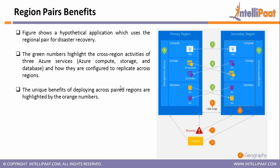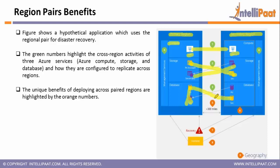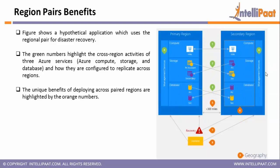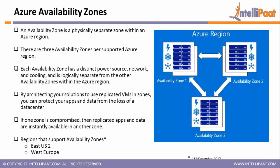Looking at the benefits: you have a primary region and a secondary region. Compute — virtual machines — running in the primary are replicated to the secondary. Storage accounts are also replicating to each other. Primary and secondary databases are also replicating to another region. All these services are actually replicating, so in case your primary region is not available, you are still able to access all your services from the secondary region pair.